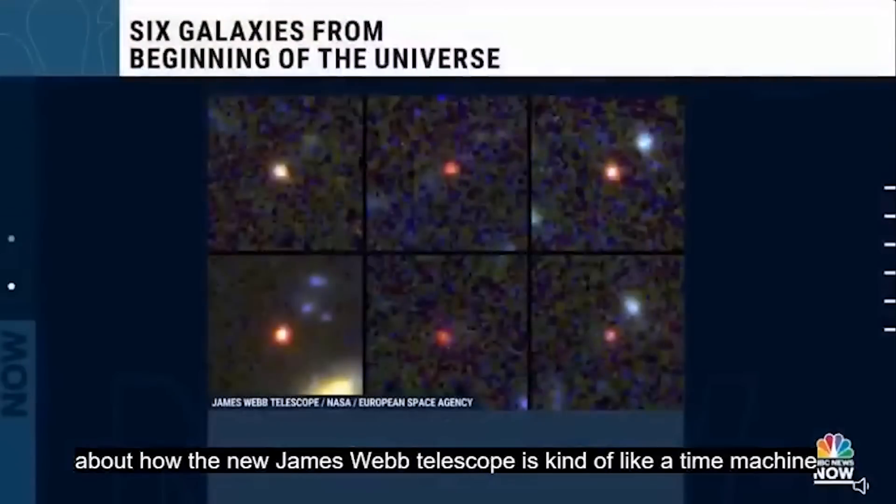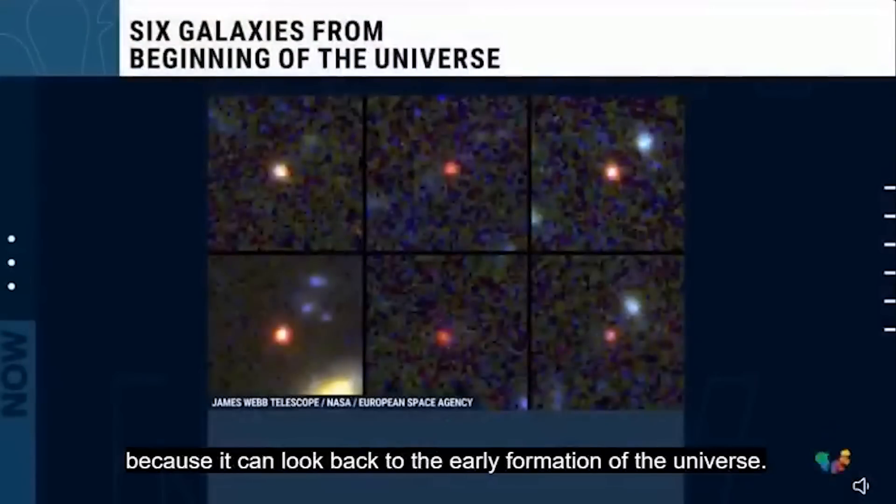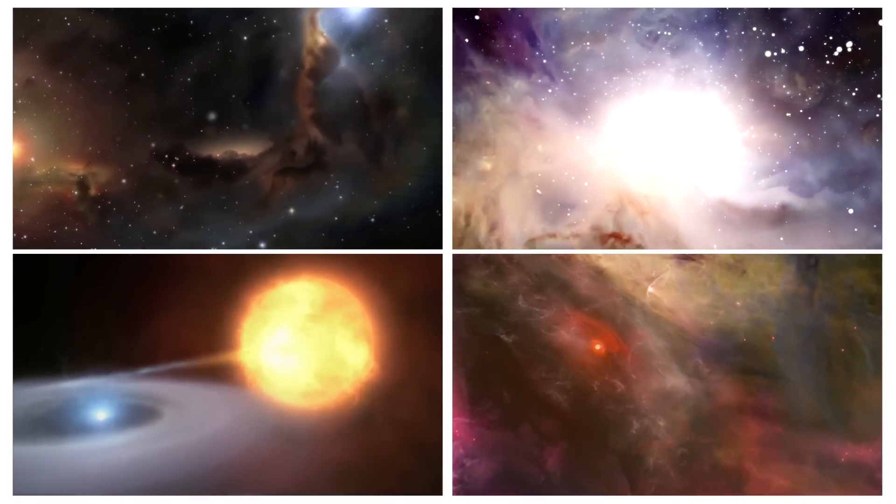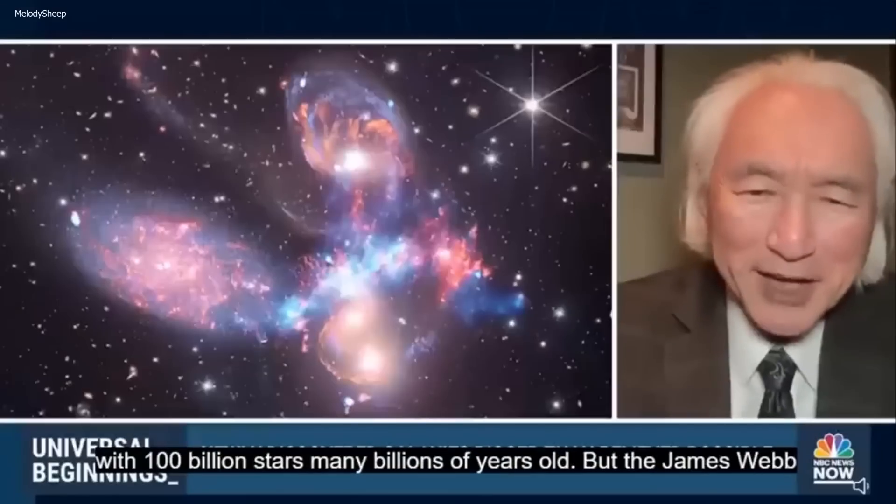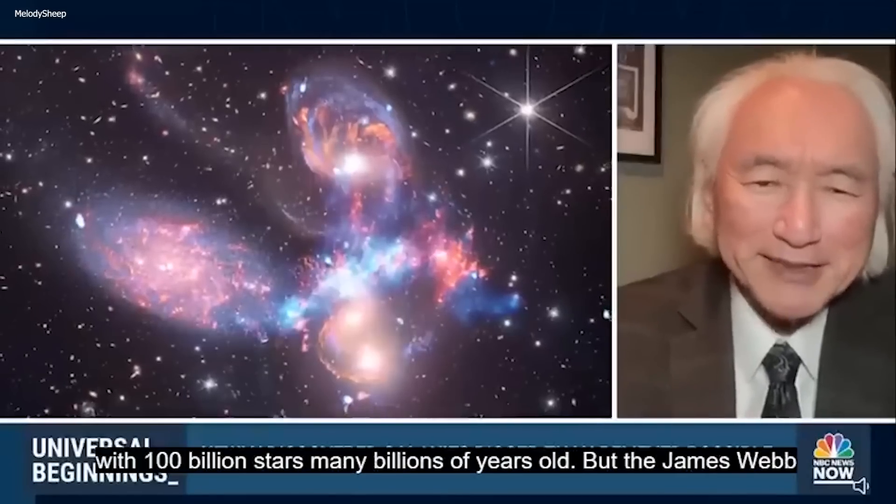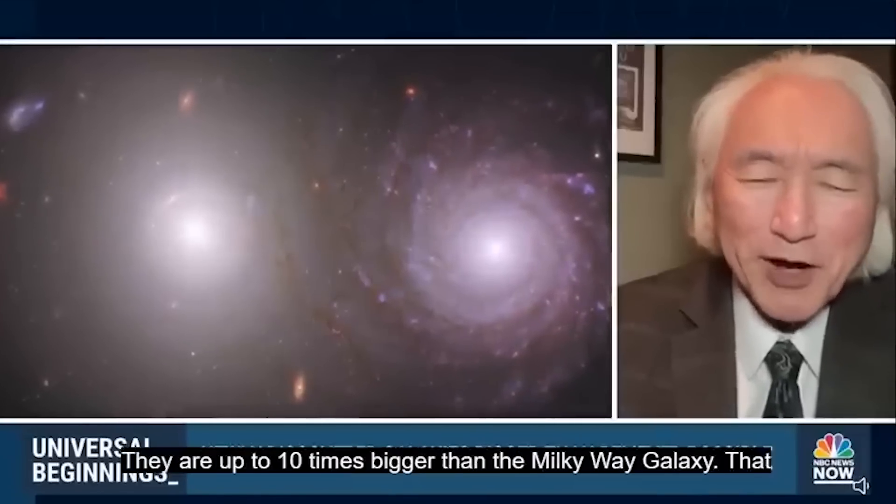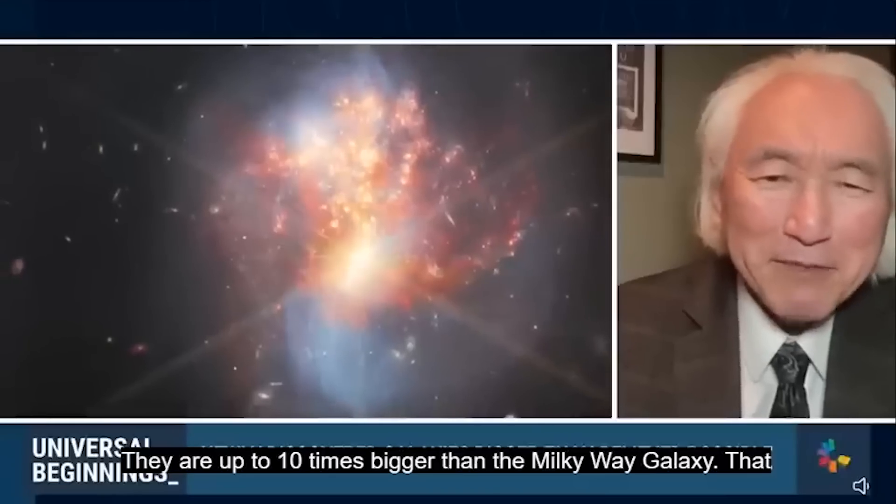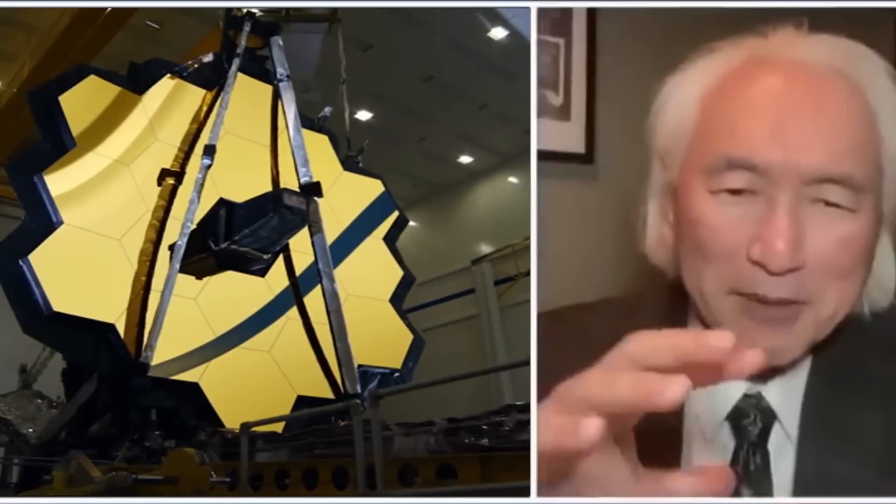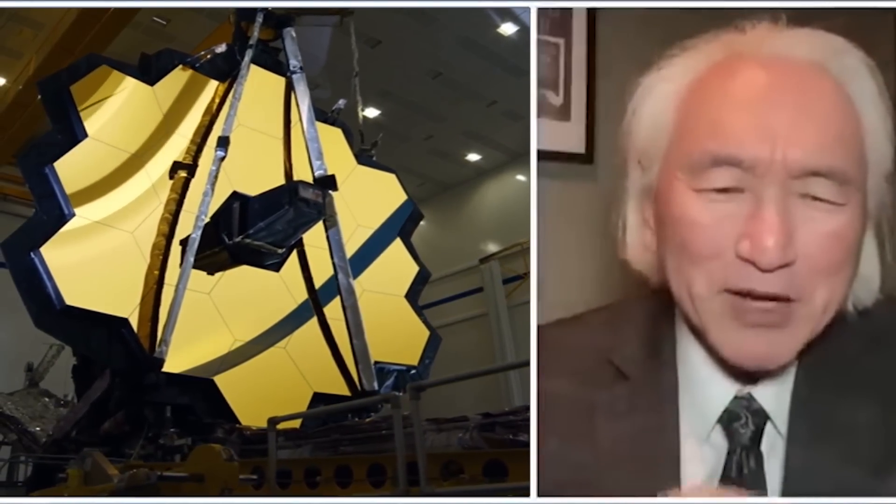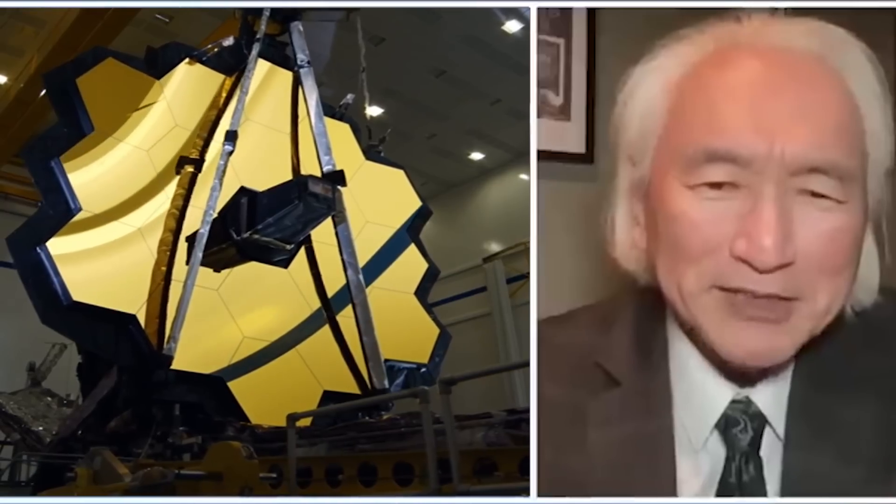We've all heard about how the new James Webb Telescope is kind of like a time machine, because it can look back to the early formation of the universe. Six shocking galaxies have been discovered that defy all explanations. The James Webb Telescope has identified six galaxies that exist half a billion years after the Big Bang that are up to ten times bigger than the Milky Way galaxy. Join us as we discuss Michio Kaku breaking his silence on the James Webb Telescope's clearest image in history.